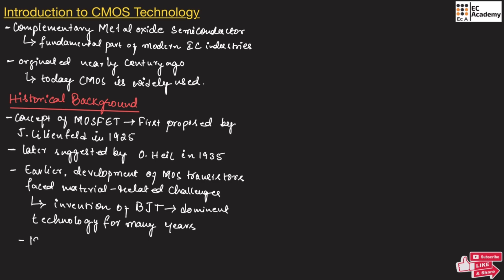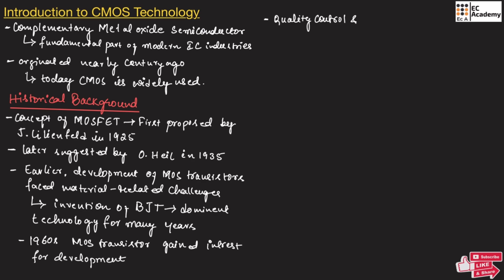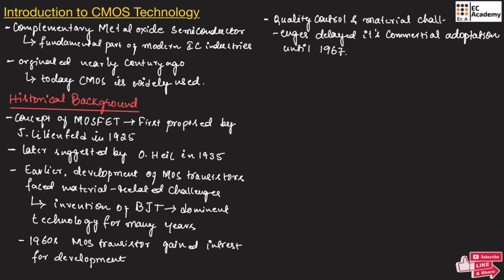Later, in the 1960s, MOS transistors gained interest for development. But quality control and material challenges delayed their commercial adaptation until 1967, so commercially it was not used until 1967.